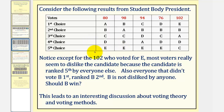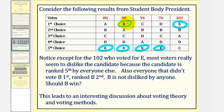If we focus on candidate E for a moment, notice how except for the 102 who voted E as their first choice, most voters really seem to dislike the candidate, because candidate E is ranked fifth for everyone else. If we compare candidate E to candidate B, notice how 98 people voted B as their first choice, only four less than E, but everyone else that didn't vote B first ranked B second. So we could say that B is not disliked by anybody, so maybe that means that B should win.